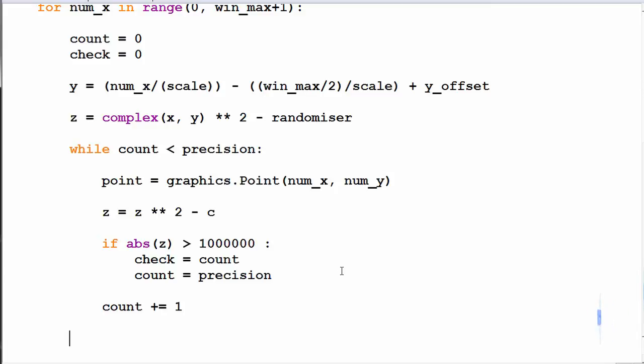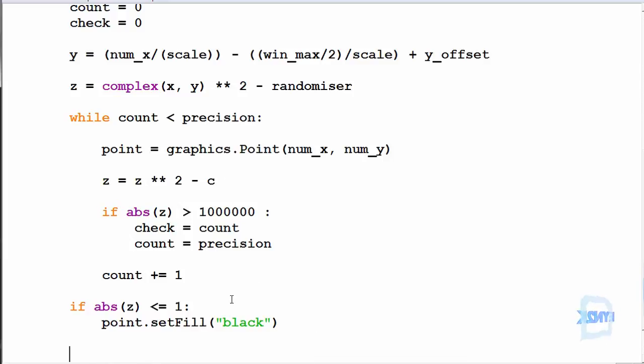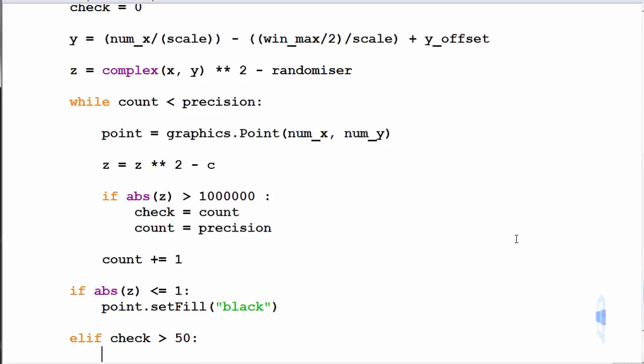And now here we need to simply color in our point. So we simply make if absolute of Z is less than or equal to 1, we'll go point.setFill and we'll color it black. This first check I use because I know that's nice and neat to color in black. This has got to do with the way the function works, the iteration. Have a look at the movie if you'd like to find out more. And we can use an elif statement such as elif the check is greater than say 50. And go point.setFill. Let's make this 12 actually and make this red.